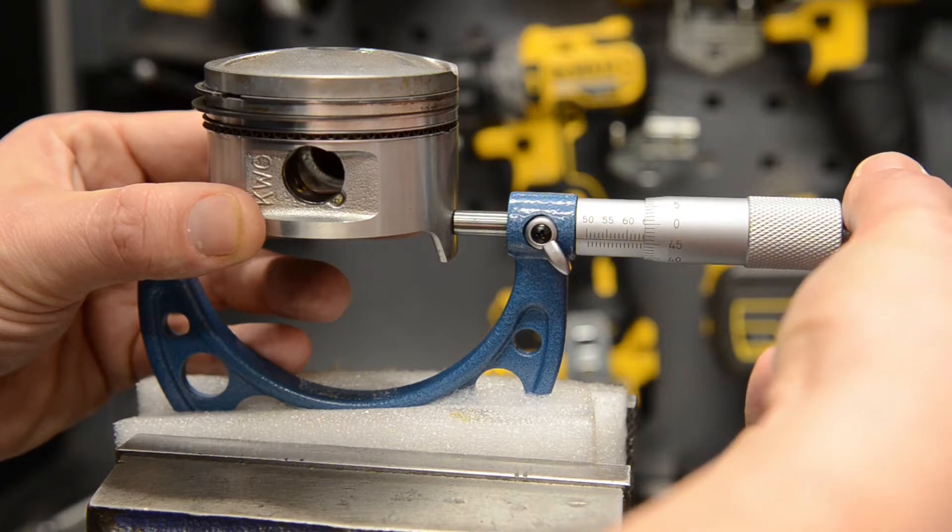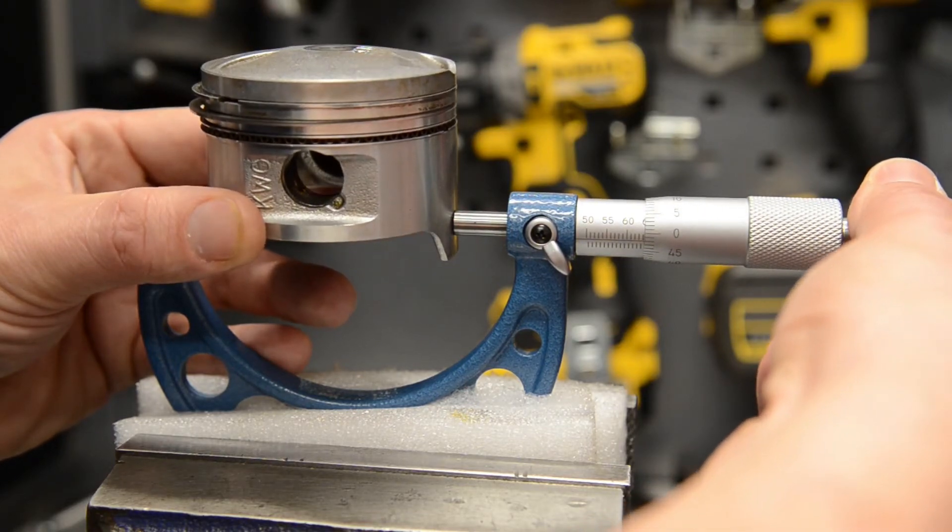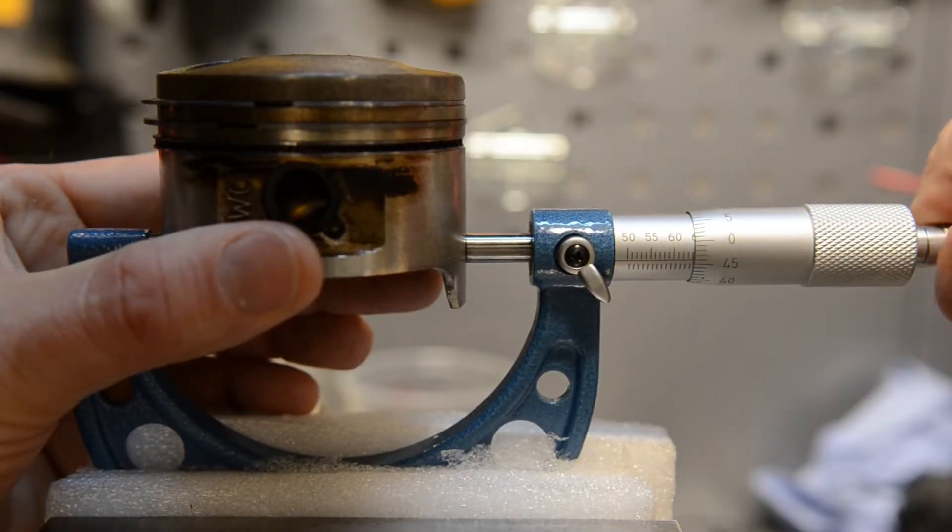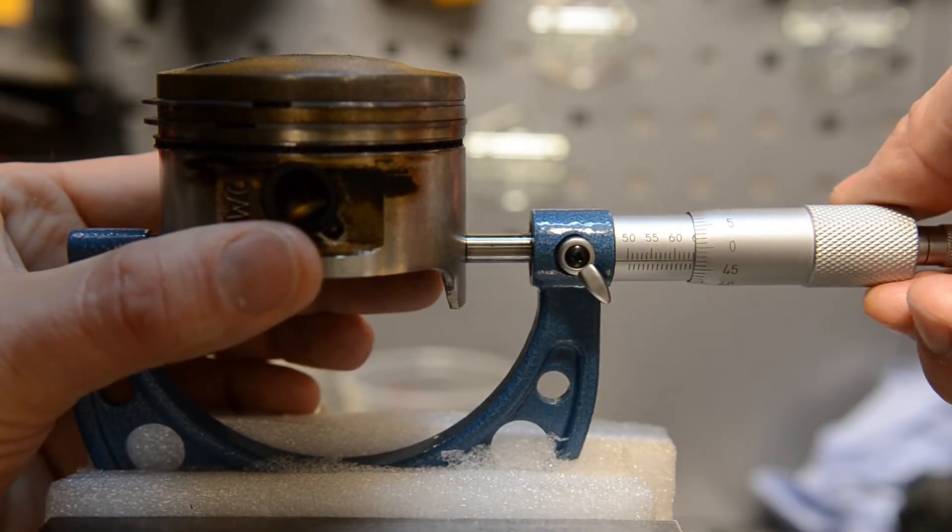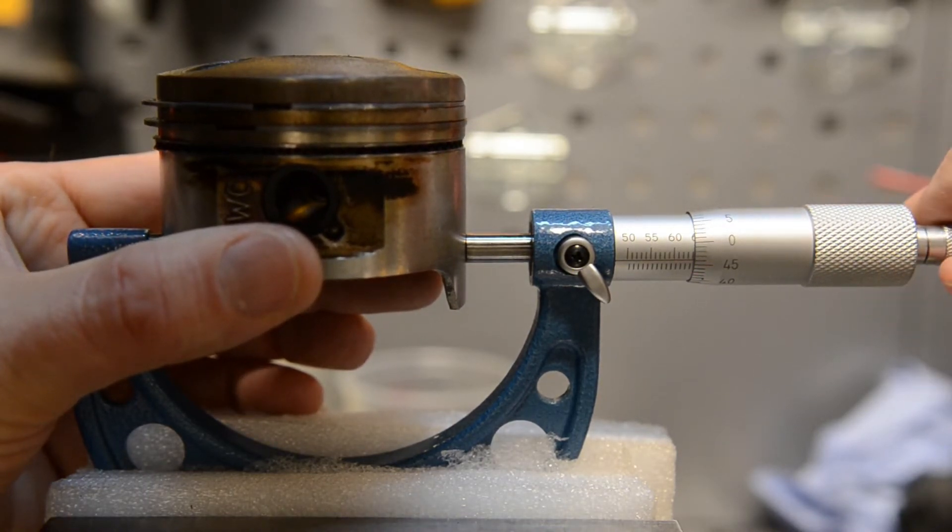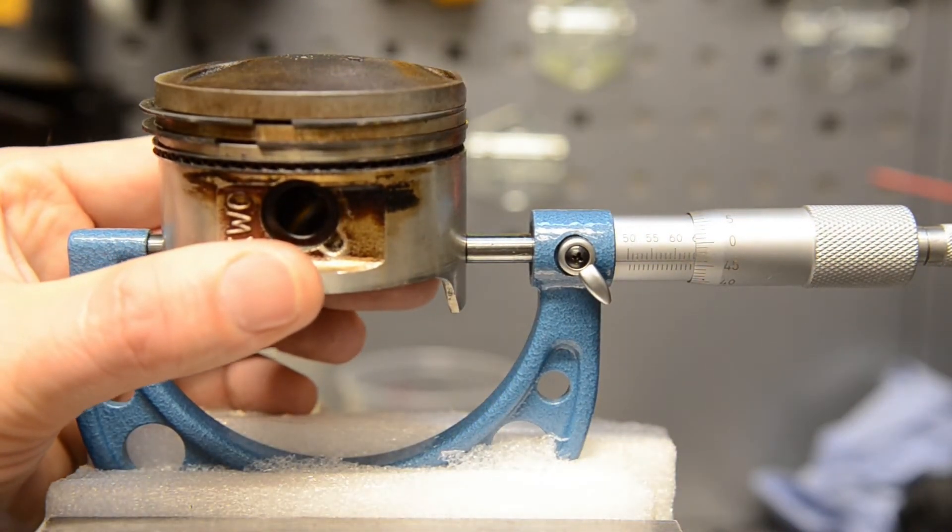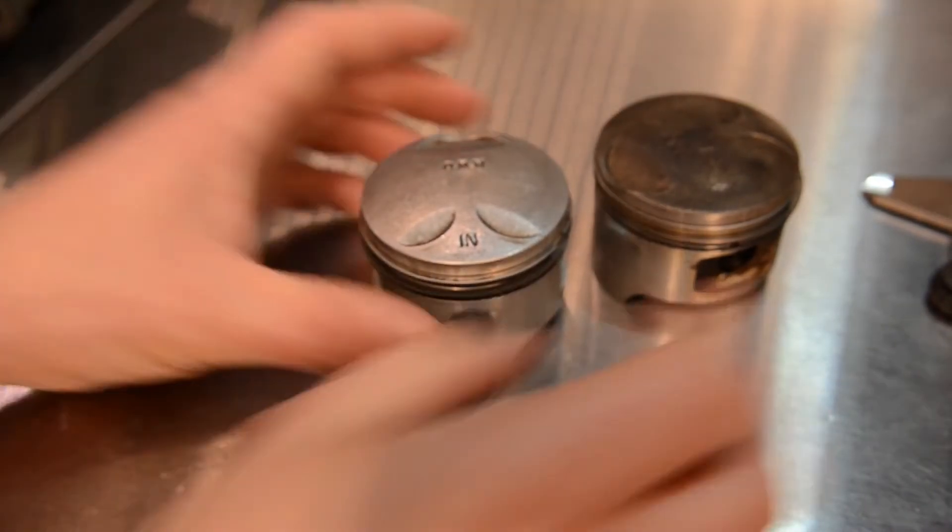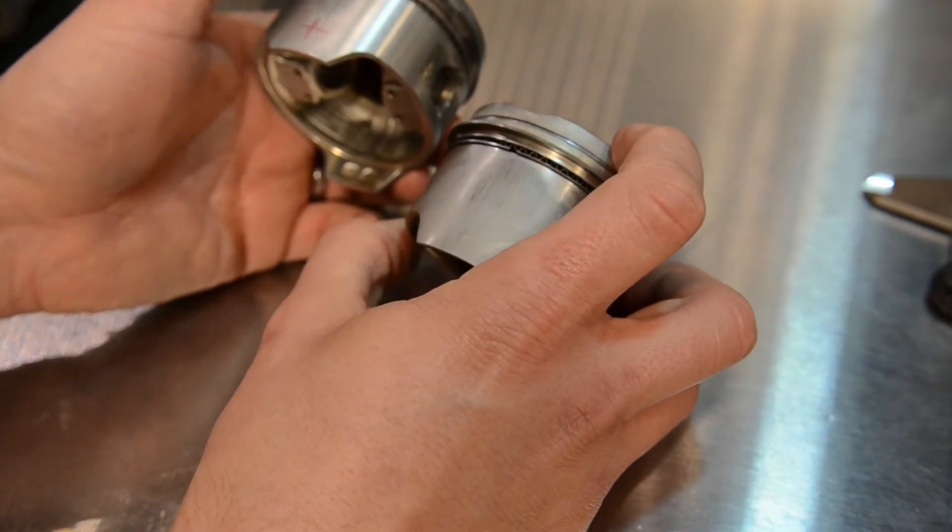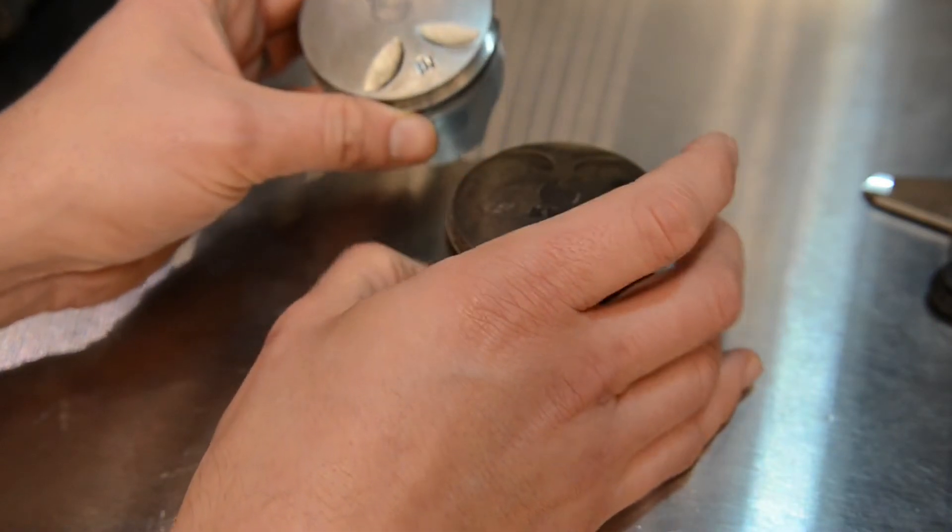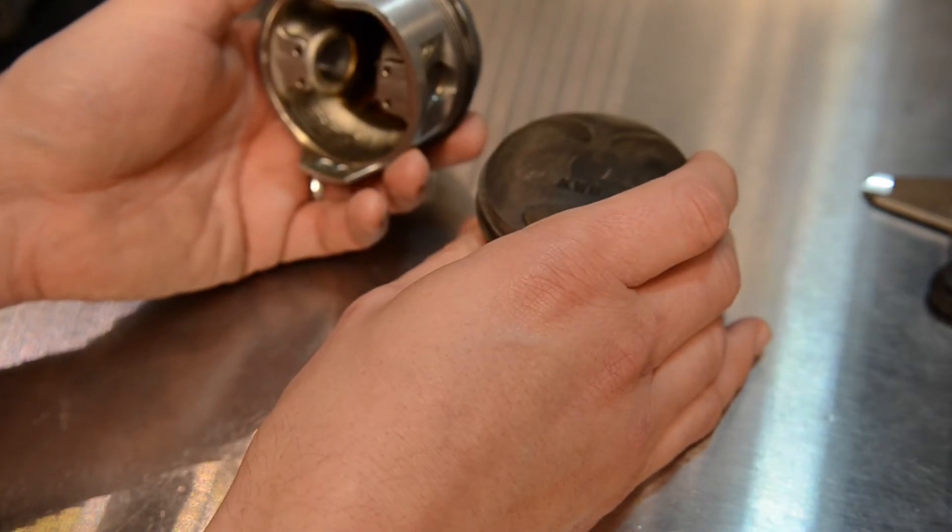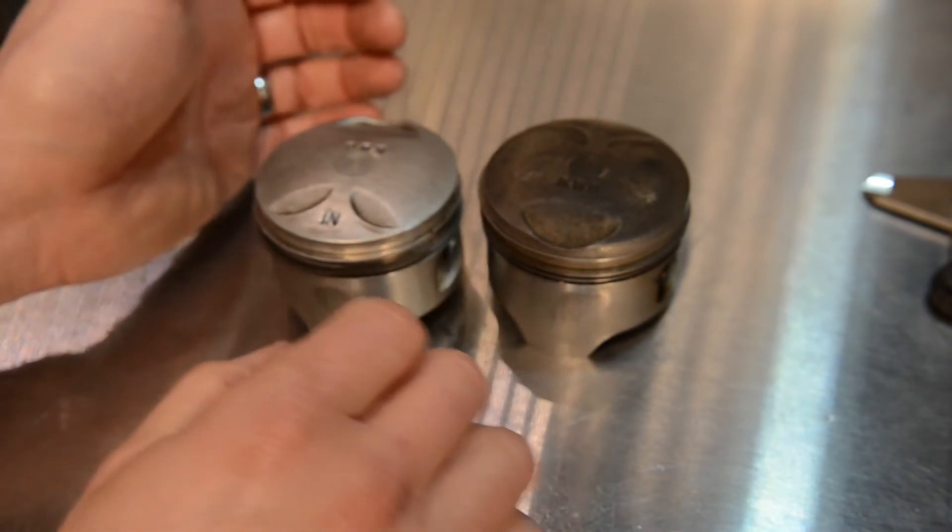I'll just measure the other one. All right, so I've measured these up and they're both the exact same measurement—both 63.96. They're within that lower service limit and they're identical, so I can use either one of them.